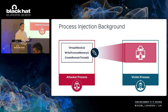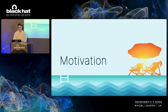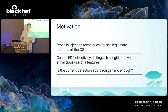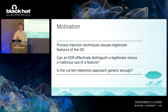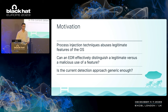And this is exactly what I managed to do, and I promise you I will show you how. The motivation for this research was derived from the fact that process injection techniques abuse legitimate features of the operating system. I wondered: can an EDR effectively distinguish legitimate versus malicious use of a feature? I also wondered, is the current detection approach generic enough to detect new and never-before-seen process injections?